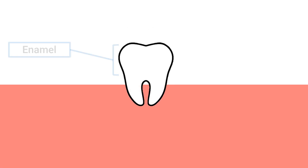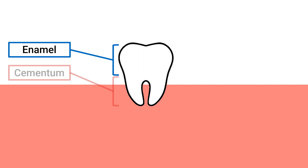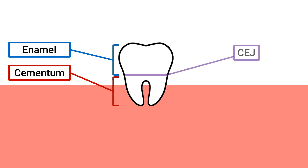This is our gingiva, and that's a tooth. The coronal portion or crown part of our tooth is made up of enamel. The root portion of the tooth is made up of cementum. Both the enamel and cementum cover the outside of our tooth.